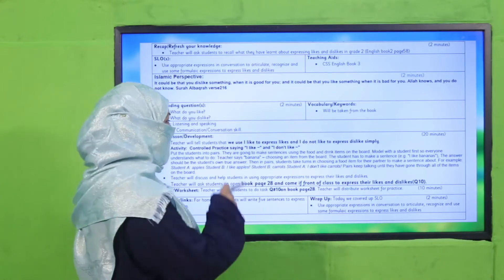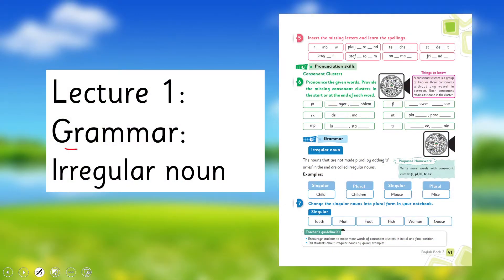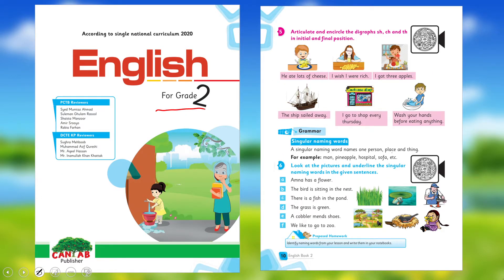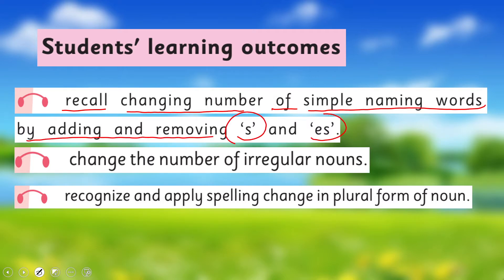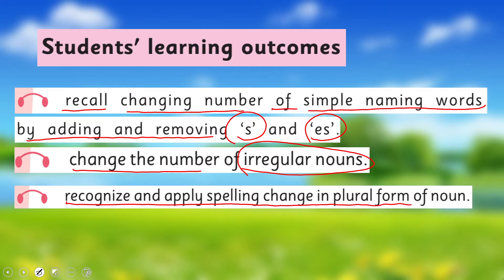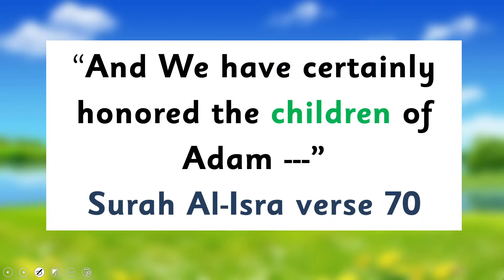I'm going to deliver my lecture according to this lesson plan. My dear children, today under the title of grammar we are going to learn about irregular nouns. Before this, in English for Grade 2, I taught you about singular naming words. I hope you remember; if not, you may watch that video lecture again. Today we will recall changing the number of simple naming words by adding and removing -s and -es, change the number of irregular nouns, and recognize and apply spelling changes in plural forms of nouns. These are our today's SLOs.